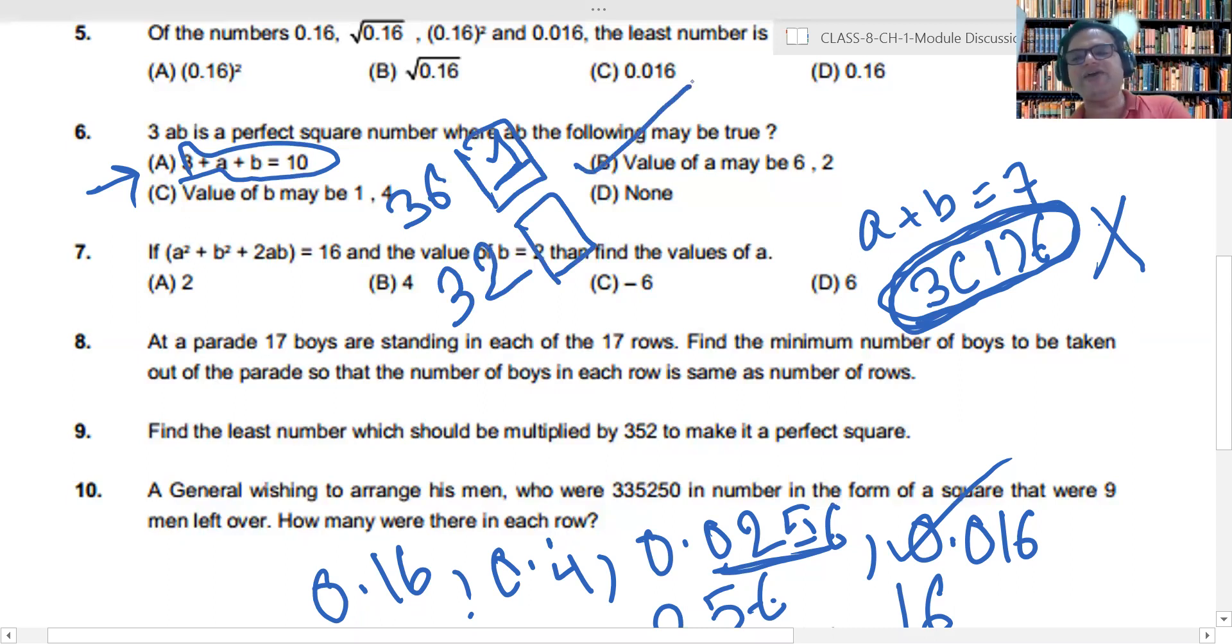A ki value six ho sakti hai. I am not sure. Let me, I have to check up with two also. Agar maine A ki value two rakha, to kya kohi number hai 321 se lekar 329 ke bish mein, which is a perfect square? Yes, I have. The number is 324, which is 18 square. To sir, is ka matlab ye wala jo option huwa, ye sahih huwa.